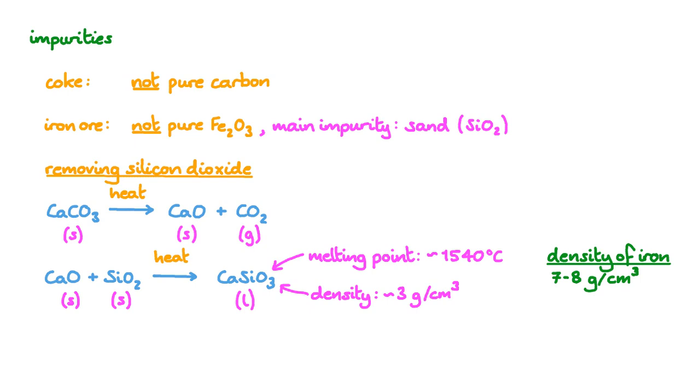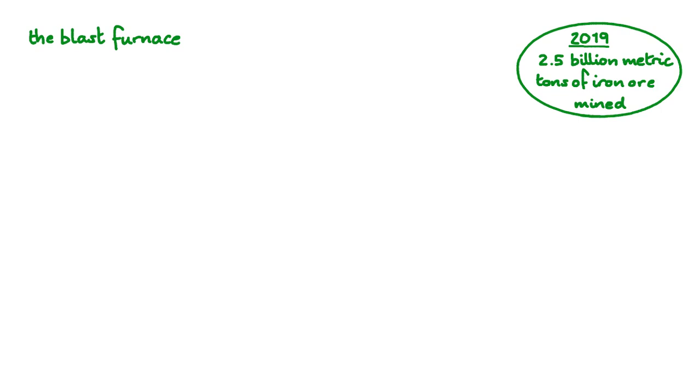Next, we need to go to the very core of how iron is extracted, the blast furnace. In the whole of 2019, 2.5 billion metric tons of iron ore was mined worldwide. That's the equivalent of 7,500 times the mass of the Empire State Building. We need massive pieces of equipment to process all that ore.